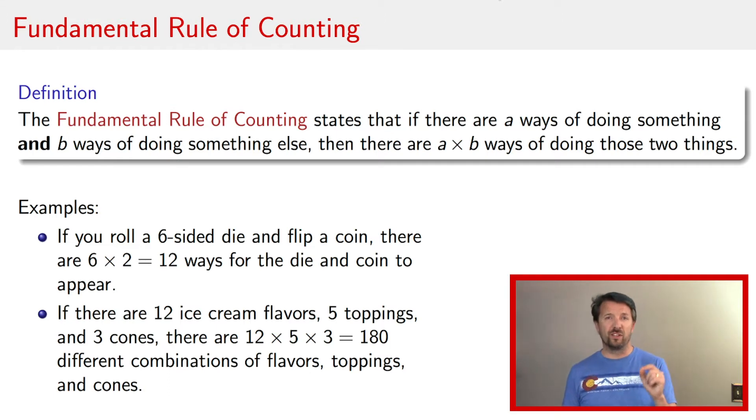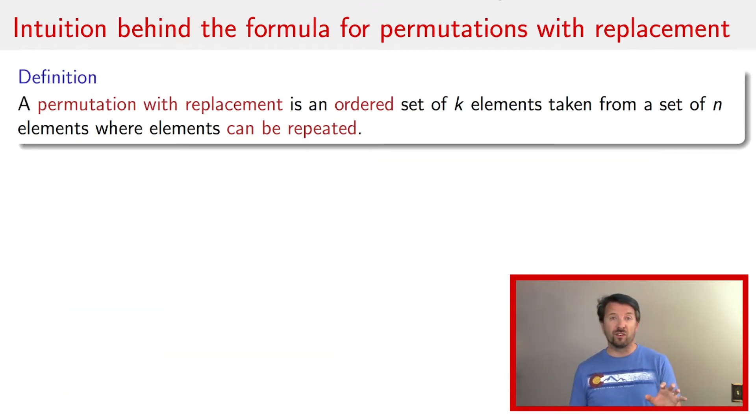Now we're going to use this fundamental rule of counting idea to derive or to provide the intuition behind the formula for permutations with replacement. As a reminder, a permutation with replacement is an ordered set of k elements drawn from a set of n elements where the elements can be repeated. And we call that with replacement because we are going to take the element out of the set, but then we're going to put it back into the set to be retaken again.